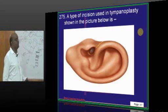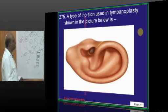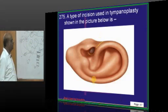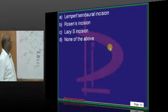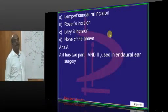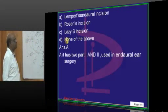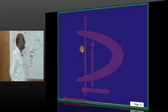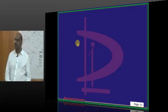Now what type of incision is used in tympanoplasty which is being shown in the picture? The incision classically—that is basically called Lempert's endaural incision.